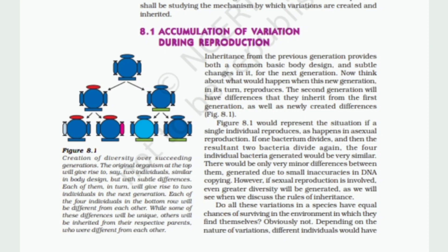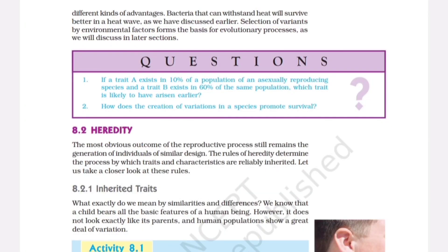Do all these variations in a species have equal chances of surviving in the environment in which they find themselves? Obviously not. Depending on the nature of variations, different individuals would have different kinds of advantages. Bacteria that can withstand heat will survive better in a heat wave, as we have discussed earlier. Selection of variants by environmental factors forms the basis for evolutionary processes, as we will discuss in later sections.